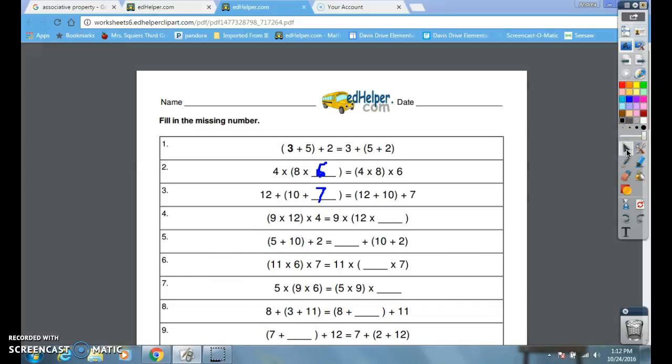Okay, so hopefully you understand associative property. There are three numbers on each side - it doesn't matter which one you do first, the order doesn't matter. Make sure that you are using the exact same three numbers on both sides. Please complete this paper and bring it in tomorrow. Thank you.